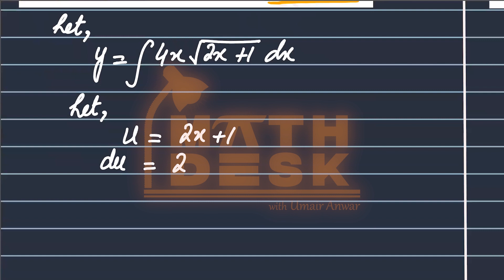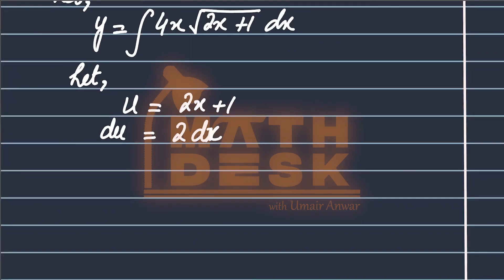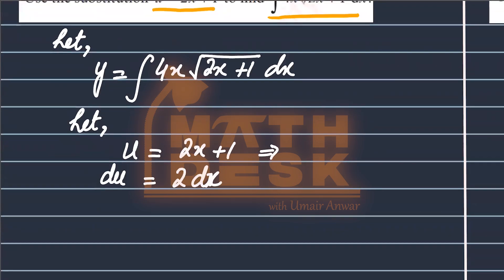We will get 2 times dx and here du will get. We will do this again because we have an x given here, then we will try this relation slightly further to derive x. x will be equal to u minus 1 upon 2.